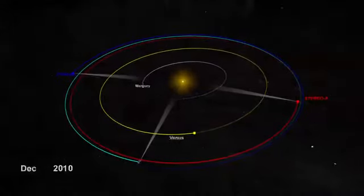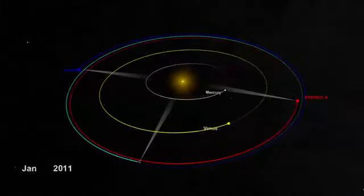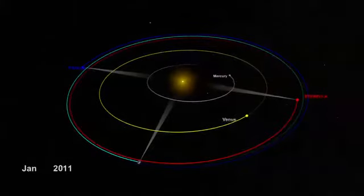Now STEREO A and B are almost exactly opposite each other, and for the first time in human history, we have a view of the entire Sun.